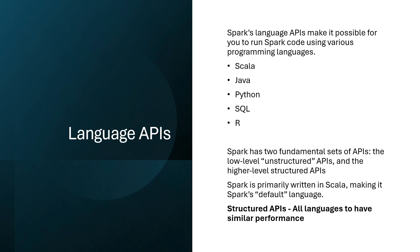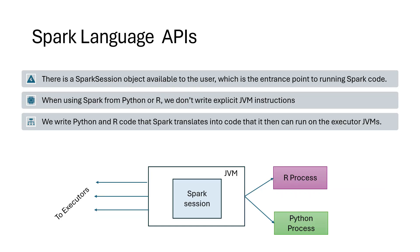At a high level, Spark has two fundamental sets of APIs: unstructured, which are low-level APIs, and higher-level structured APIs. Spark is written in Scala as the default language, but that doesn't stop us from writing code in many other languages. When we talk about structured APIs, all languages would have similar performance — so there won't be a drastic difference when using Python versus Java versus Scala. The driver and executors are Java processes running on machines in the cluster.